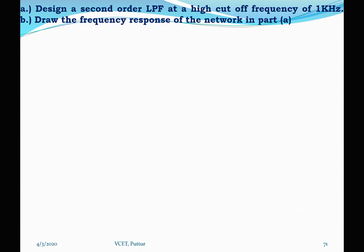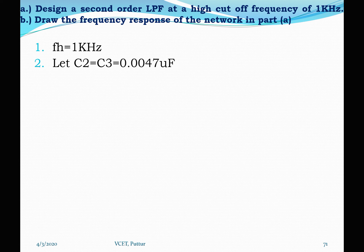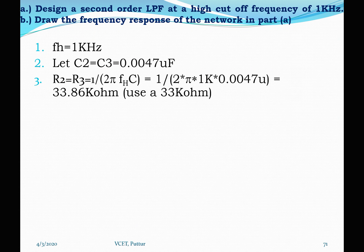We now design a second-order low pass filter at a cutoff frequency of 1 kHz. We must find the resistor and capacitor values, design the filter by finding R1 and RF, then draw the frequency response. The cutoff frequency is FH = 1 kHz. We choose C2 = C3 = 0.0047 µF. Then R2 = R3 = 1 / (2π × 1 kHz × 0.0047 µF) = 33.86 kΩ, so we use the standard value of 33 kΩ.